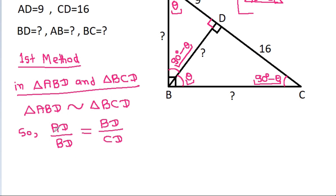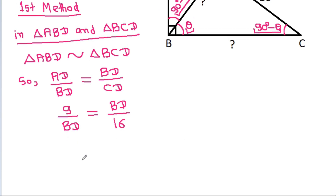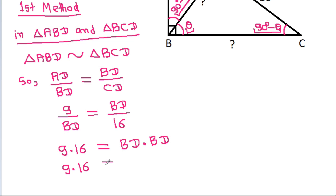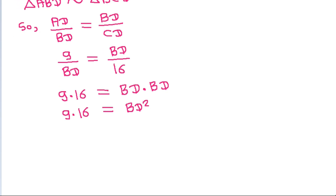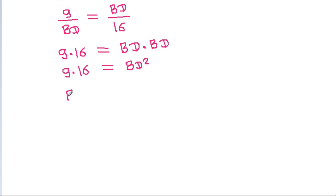AD is 9, divided by BD, equals BD divided by CD which is 16. So 9 times 16 equals BD squared, giving BD squared equals 144, and BD equals 12.